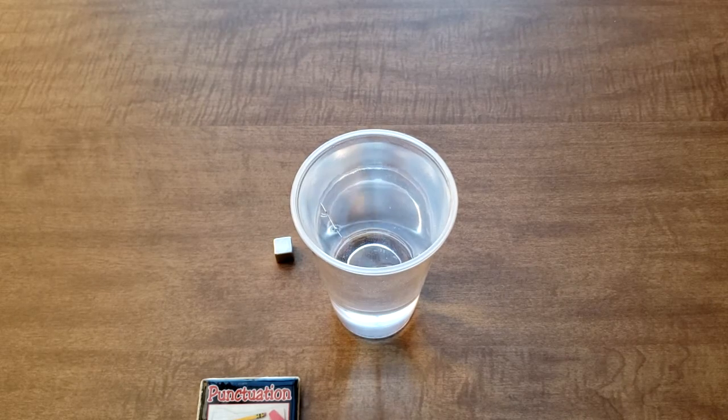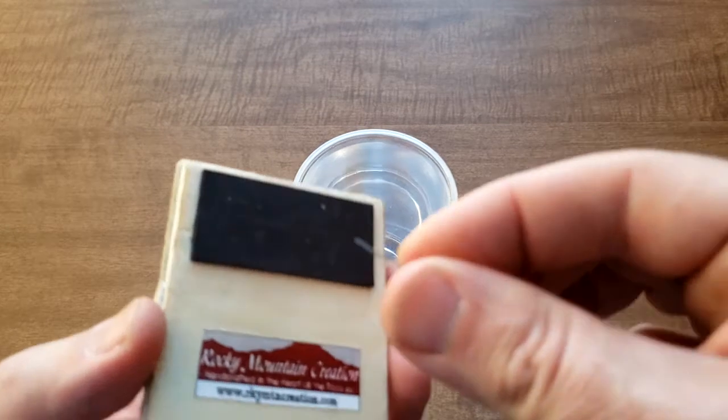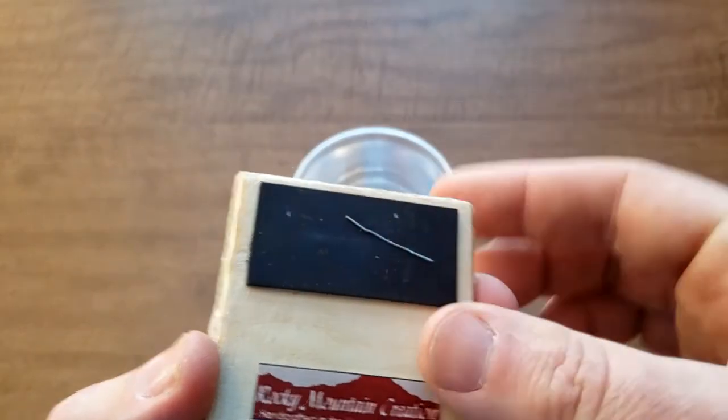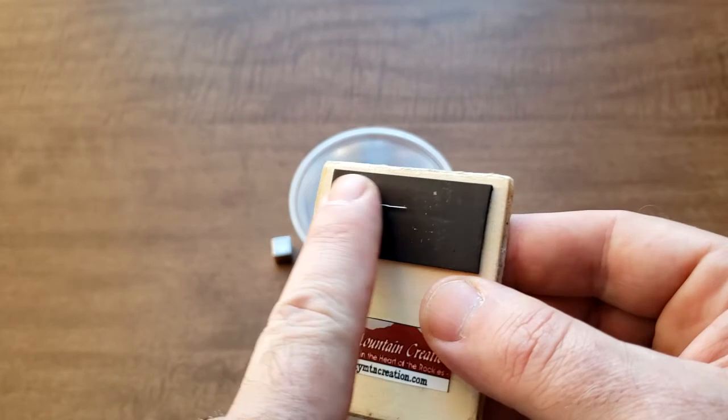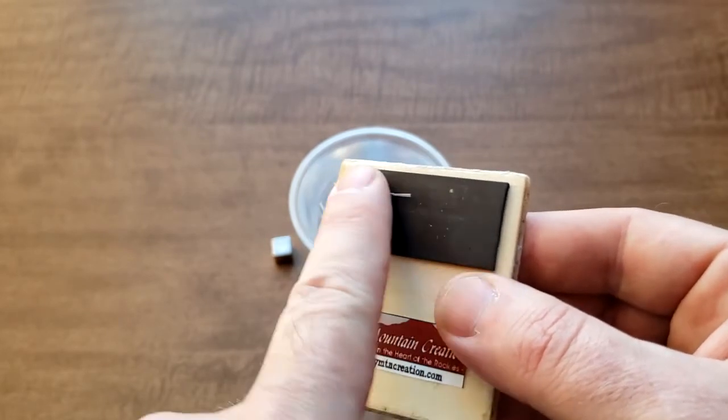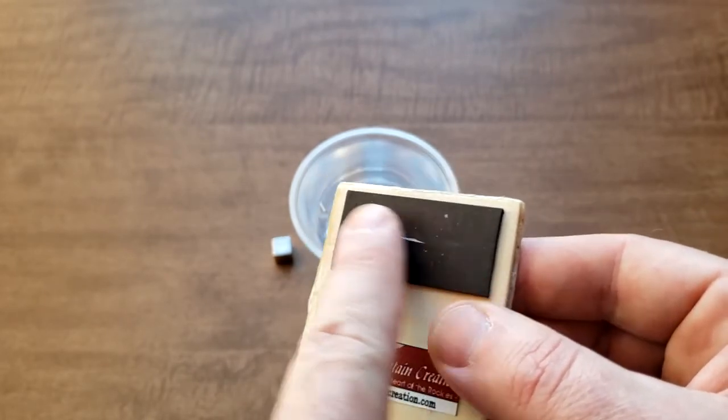And then what you do is you want to align the charges in the metal by rubbing it back and forth in the same direction on a magnet. So just do that for a little bit.